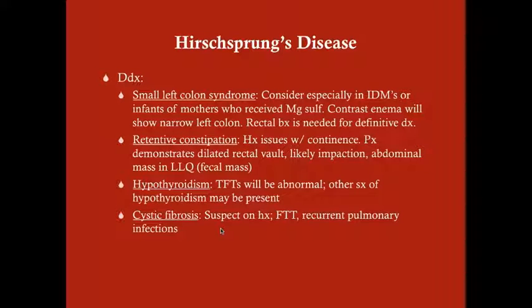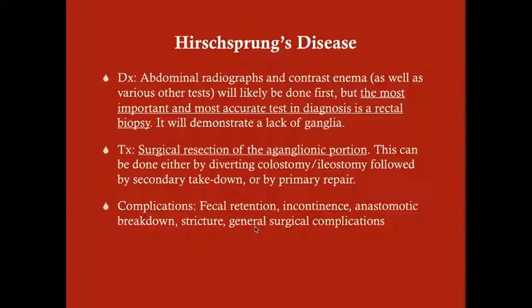Cystic fibrosis should be suspected on history — all babies in the U.S. are tested for it. Especially if there's a family history, you may have a history of meconium ileus, eventual failure to thrive, and recurrent pulmonary infections. For diagnosis, abdominal radiographs and contrast enema are important first steps, but the most accurate test to confirm Hirschsprung's is the rectal biopsy, which demonstrates the pathognomonic lack of ganglia.